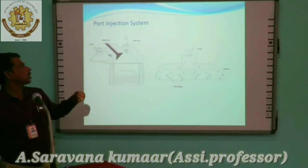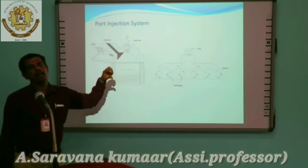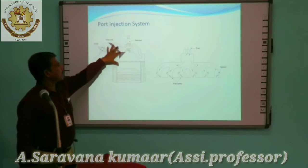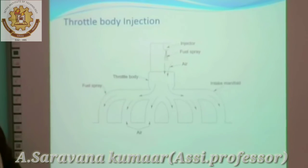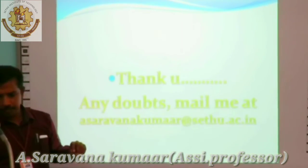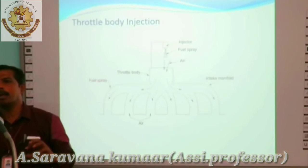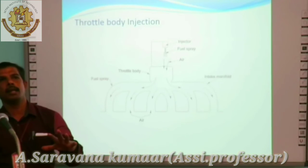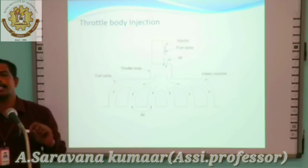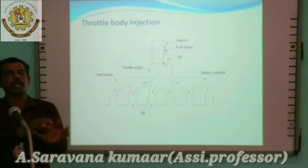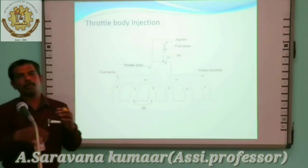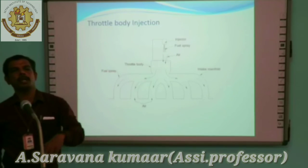Here is a port injection system. In the port injection system, the fuel injector is placed near the cylinder through the air passage. Whenever the power stroke begins, the fuel is injected through a nozzle directly into the cylinder. Here is a throttle body injection. In the throttle body injection, only one injector is used for any number of cylinders. Whenever a power stroke begins, the fuel is sprayed commonly in the total area. The intake manifold takes the air-fuel mixture and supplies it. Whenever the inlet valve opens, the air-fuel mixture enters into the cylinder. The air-fuel mixture is prepared and ready in the total intake manifold area to deliver whenever the inlet valve opens.